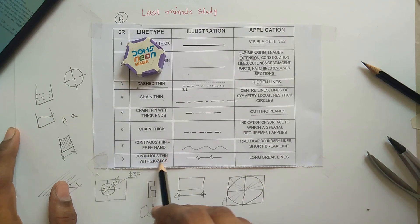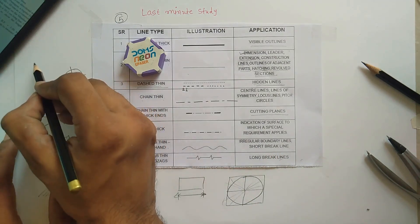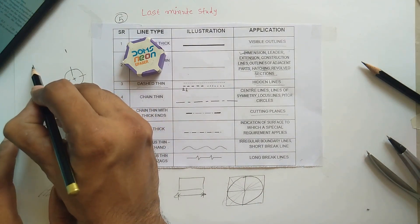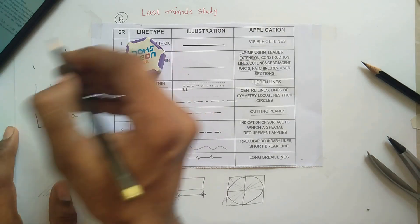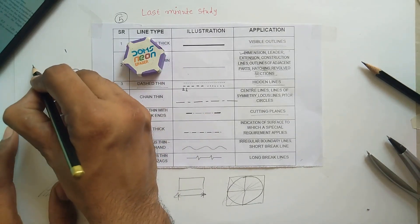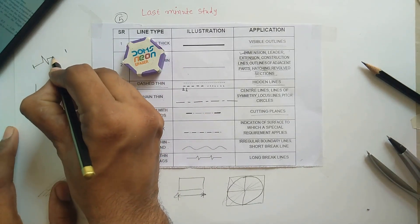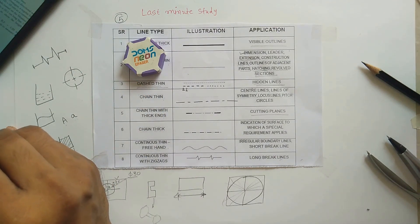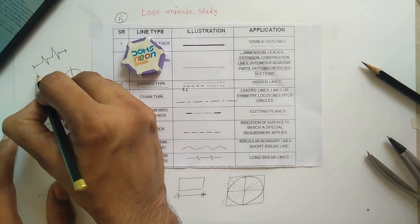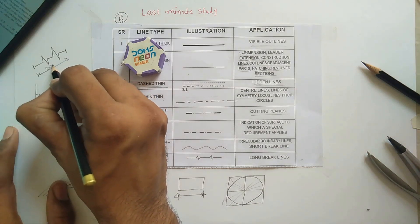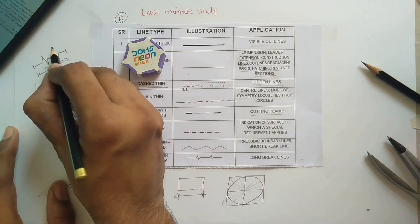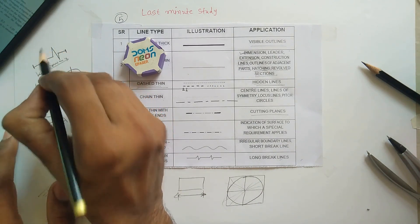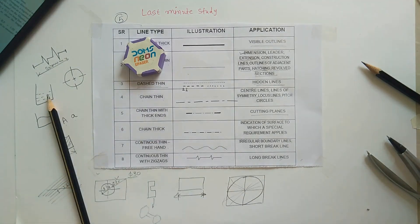Finally, there is the continuous thin with zigzag line, used as a long break line. If the distance between two points is very long and cannot fit on the drawing sheet, you draw a zigzag break line to indicate the break. For example, if something is 800 mm long, you do not need to draw the full 800 mm on the sheet - you use the long break line to represent it. These are the applications of the different types of lines.